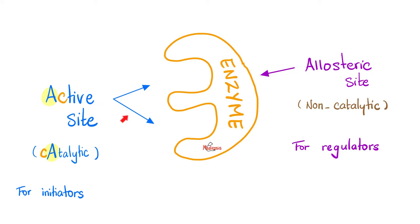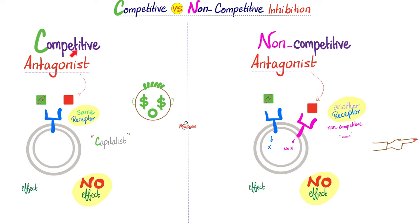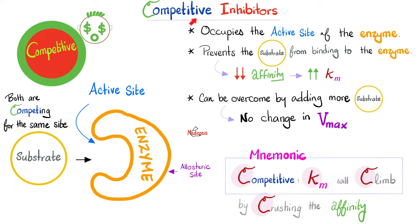The only inhibitors that bind to the active site are the competitive inhibitors. Every other inhibitor will bind to the allosteric site. Cody the capitalist is very competitive — he occupies the active site. This decreases affinity, which raises the KM. There is no change in VMAX. Competitive inhibitors are the only inhibitors that bind the active site and the only ones that do not lower VMAX. Competitive inhibitors crush the affinity, so KM will climb, because KM and affinity are always opposites.